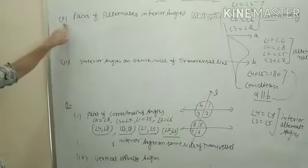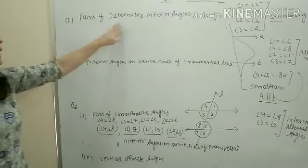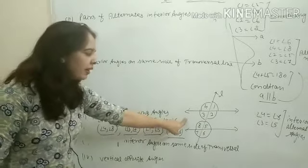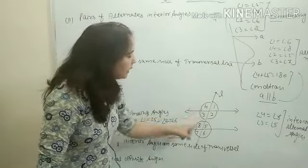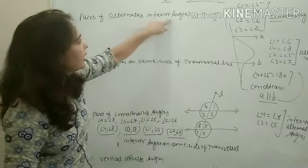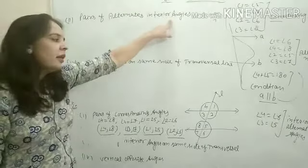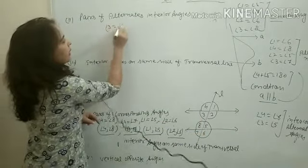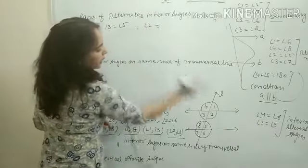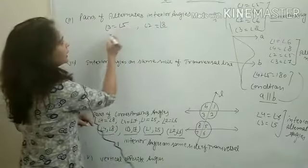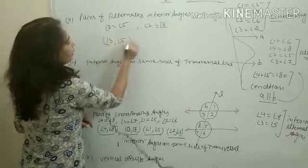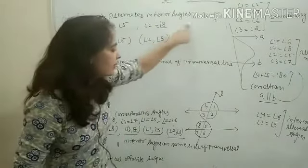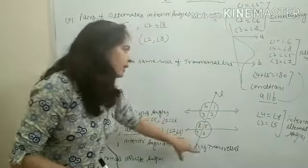This is part 2: pair of alternate interior angles। अब हमें alternate angles निकालने हैं। Interior बोला है, इसलिए exterior पर focus नहीं करना। Interior की बात करें तो angle 3 equal to angle 5, और angle 2 equal to angle 8। Pairs: (angle 3, angle 5) and (angle 2, angle 8) — you can easily find the pair of alternate interior angles।